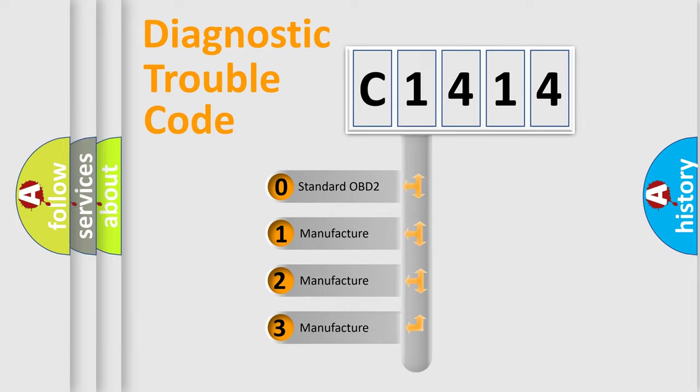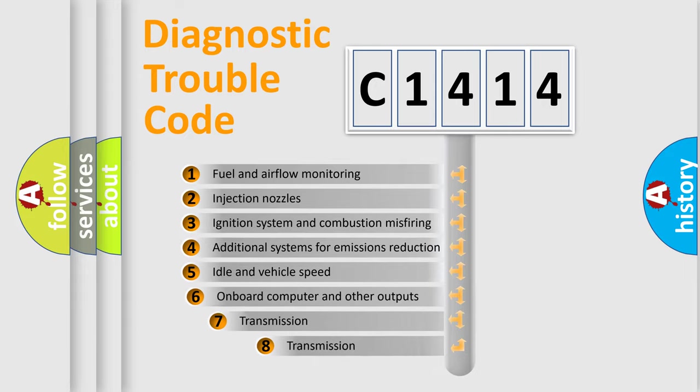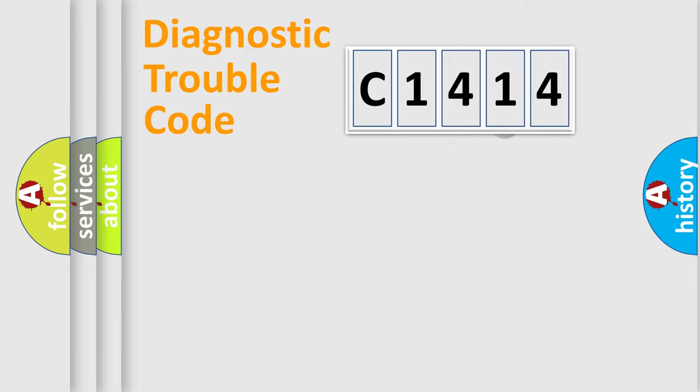If the second character is expressed as zero, it is a standardized error. In the case of numbers 1, 2, or 3, it is a manufacturer-specific error. The third character specifies a subset of errors. The distribution shown is valid only for the standardized DTC code.